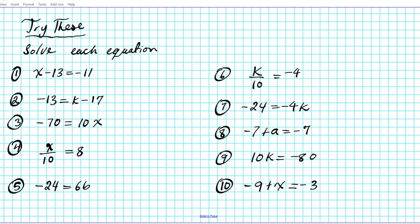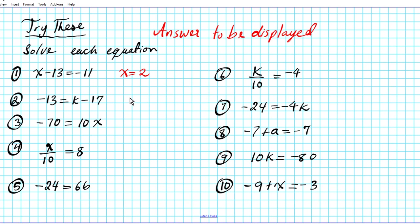We're now going to display the answers. Number 1: X equals 2. Number 2: K equals 4. Number 3: X equals negative 7. Number 4: X equals 80.